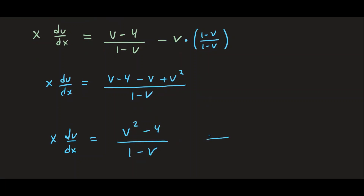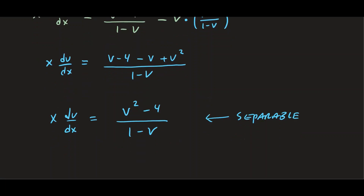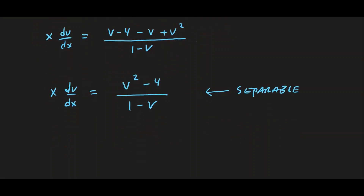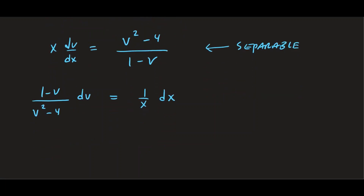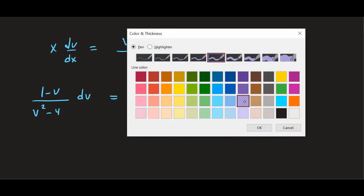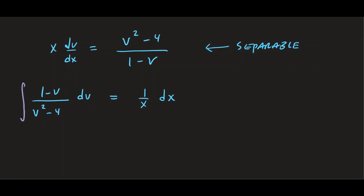This equation is now separable, so we can use the method of separation of variables. Separating v's with dv and x with dx, we get 1 minus v over v squared minus 4 dv equals 1 over x dx. Now we integrate both sides. The right-hand side is straightforward: that's ln of the absolute value of x.